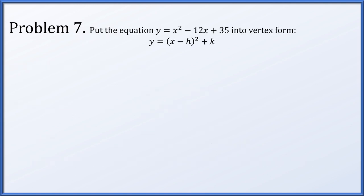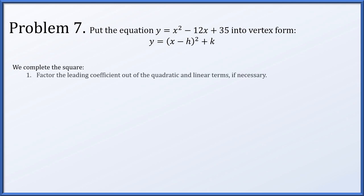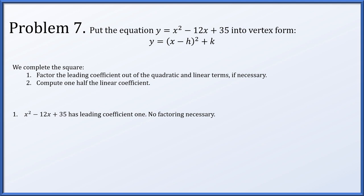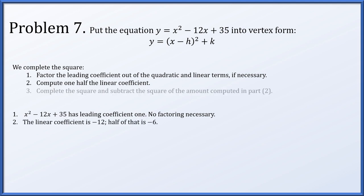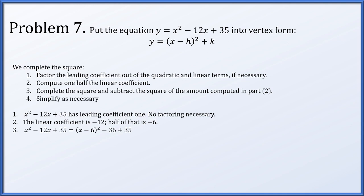Next, put y equals x squared minus 12x plus 35 into vertex form. We want y equal to x minus h squared plus k, so we need to complete the square. The leading coefficient is 1, so no factoring needed. The linear coefficient is negative 12; one half of that is negative 6. Completing the square: x squared minus 12x becomes x minus 6 squared minus 36. With the plus 35 still present, we simplify to x minus 6 squared minus 1, which is exactly vertex form with h equals 6 and k equals negative 1.